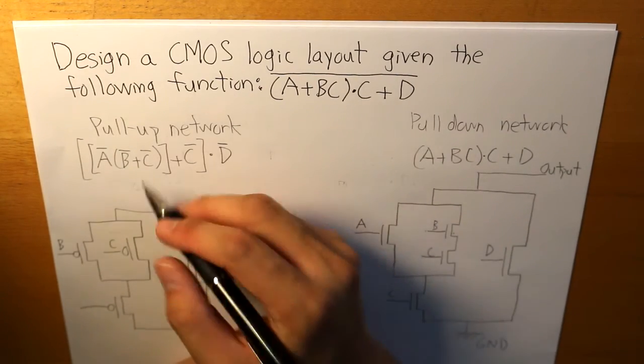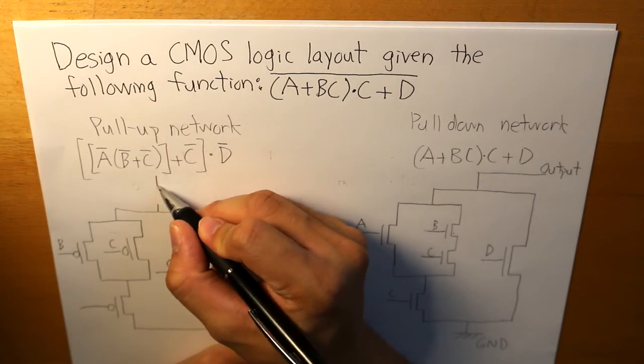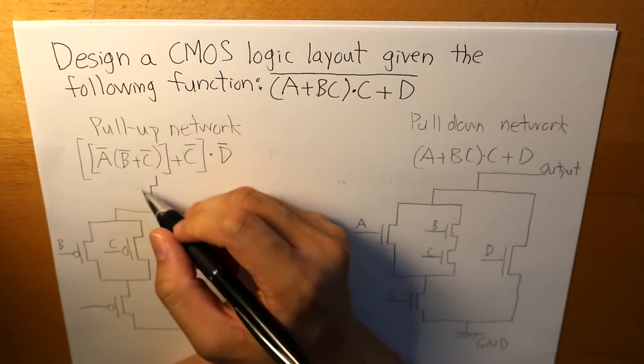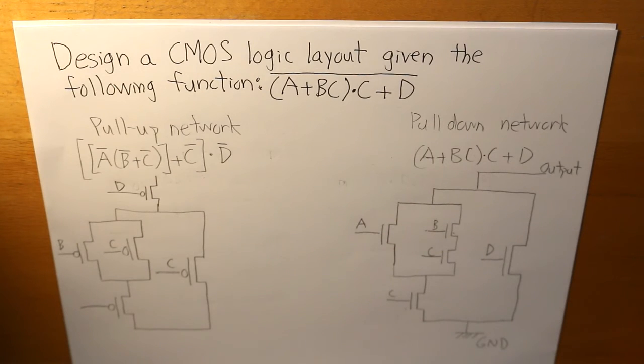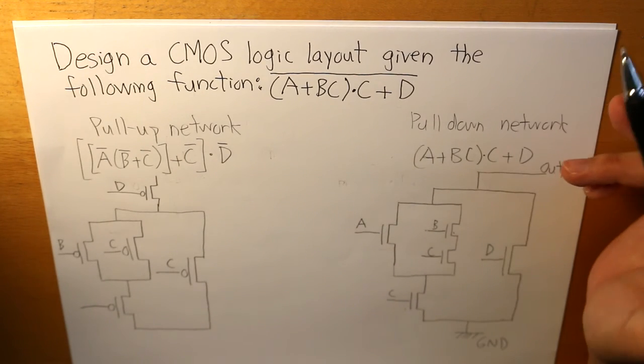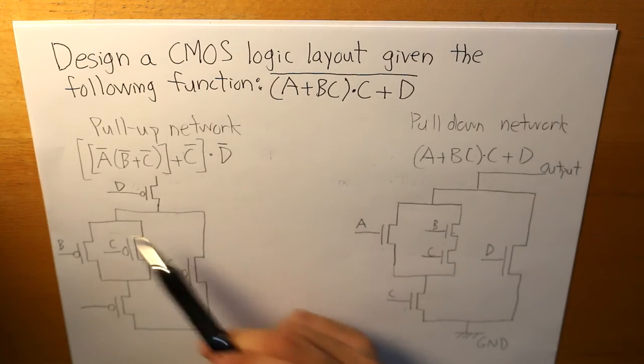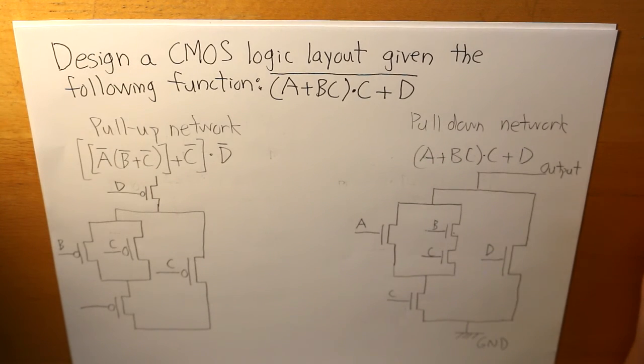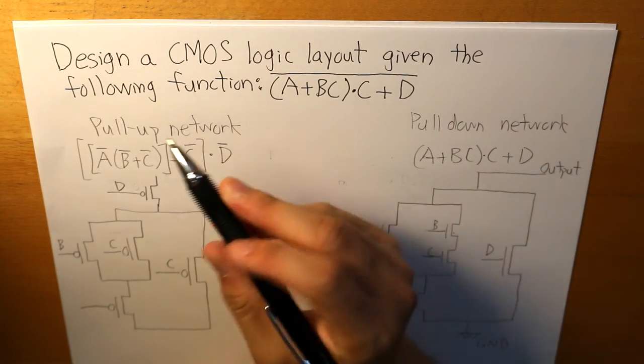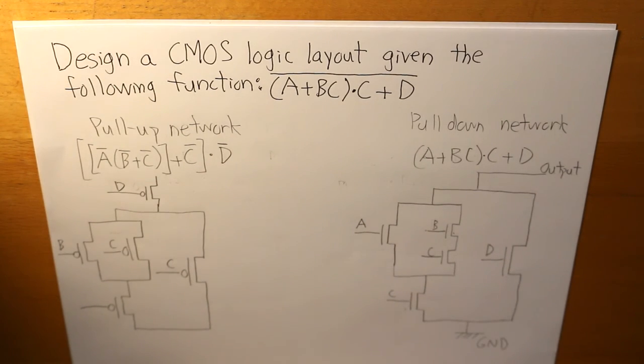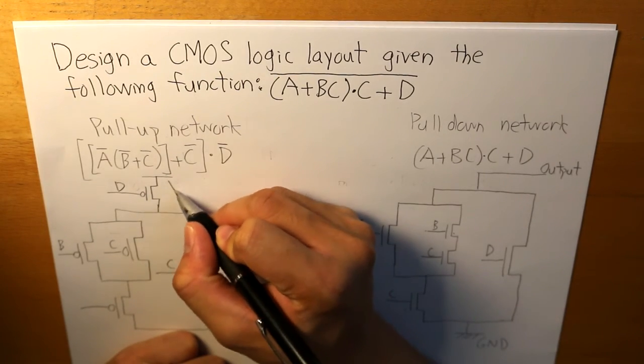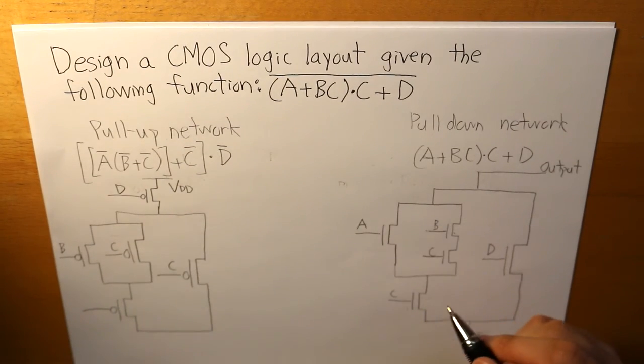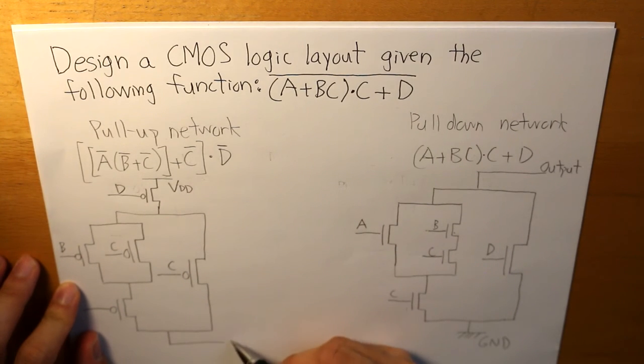And then this entire thing would be in series with D. Now we have to label what this PMOS would be connected in between. So for PMOS what I've clarified again in my previous video about CMOS inverters is that for PMOS at the top it is connected to a voltage VDD and at the bottom it's connected to the output.